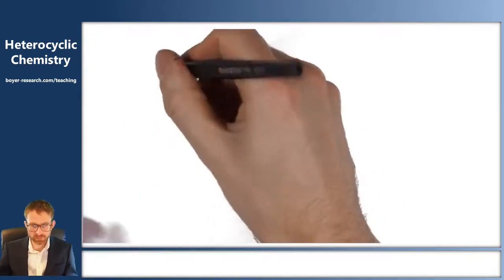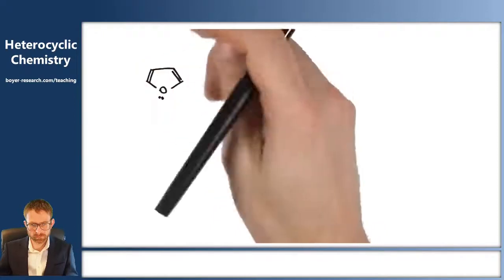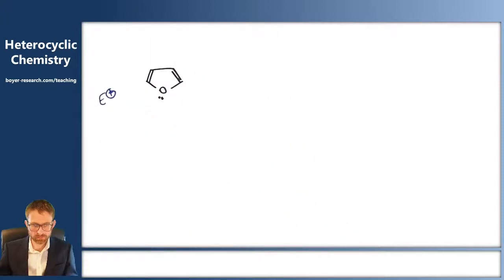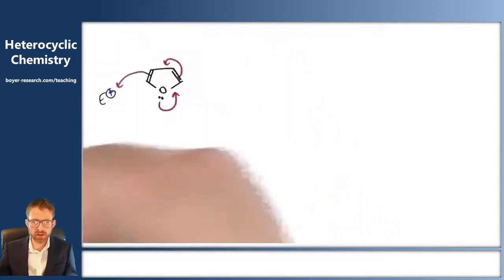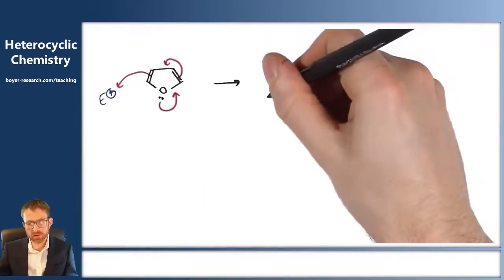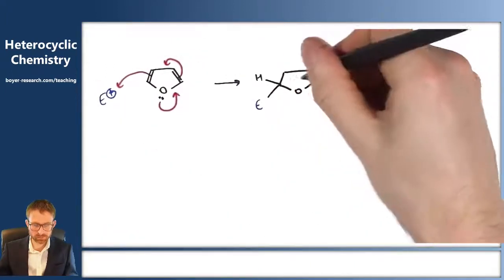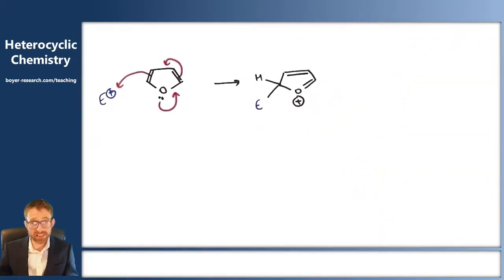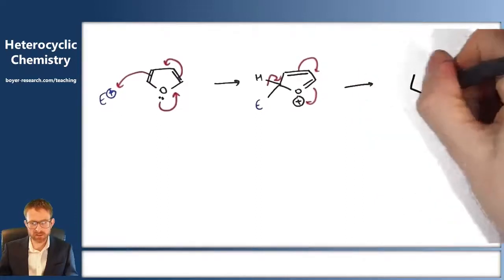The lone pair on our furan is what drives our reactivity, so we can use that to push the arrows around the ring and make a new bond between carbon number two on our furan and our electrophile, E+. This breaks the aromaticity in our system, so we regain aromaticity by losing the hydrogen and quenching the positive charge.